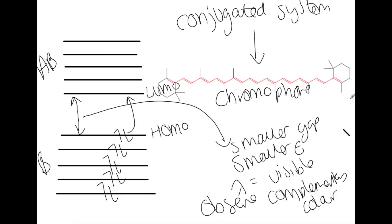The larger the chromophore, then the smaller the gap between the HOMO and LUMO. So the smaller the energy that can be absorbed. So that will change the color of the molecule that you see.